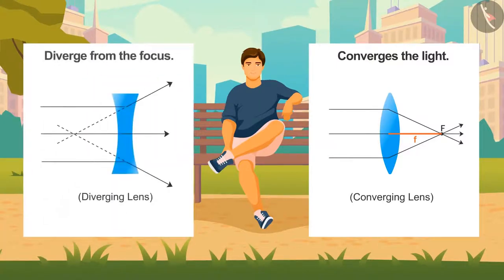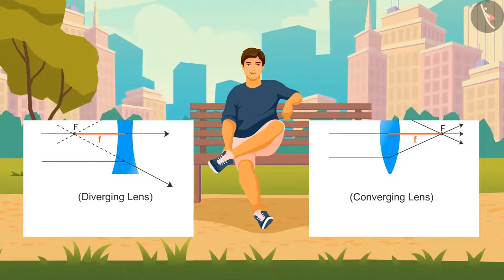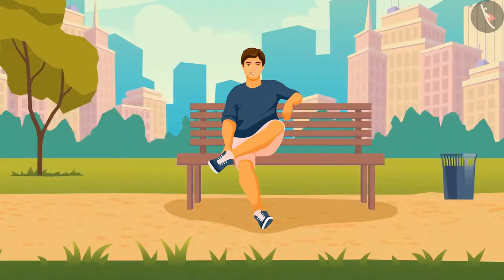Conversely, in the case of a concave lens, the light after refraction appears to be diverged from the focus which is on the left side of the lens. Hence, the focal length is taken negative in this case.